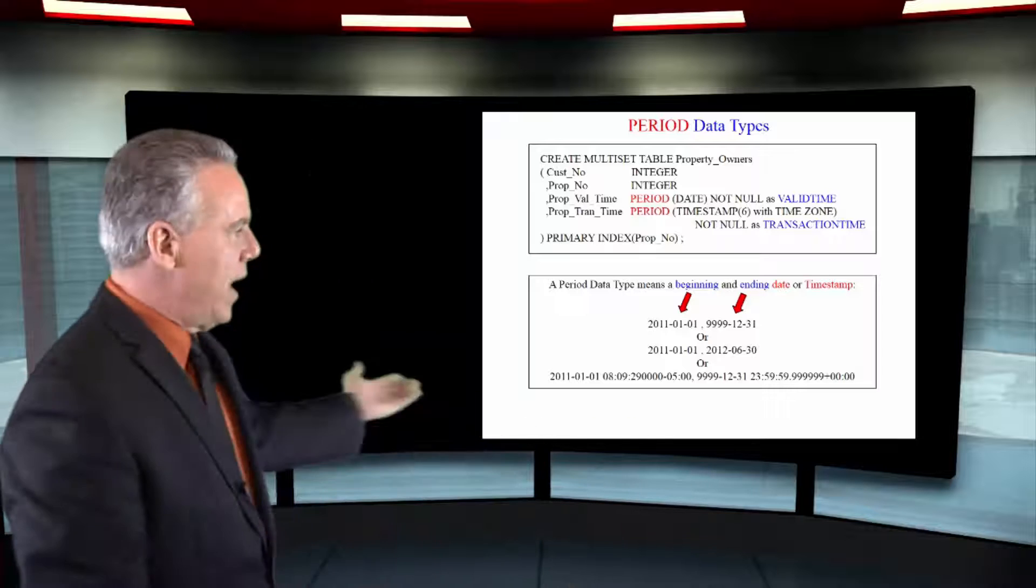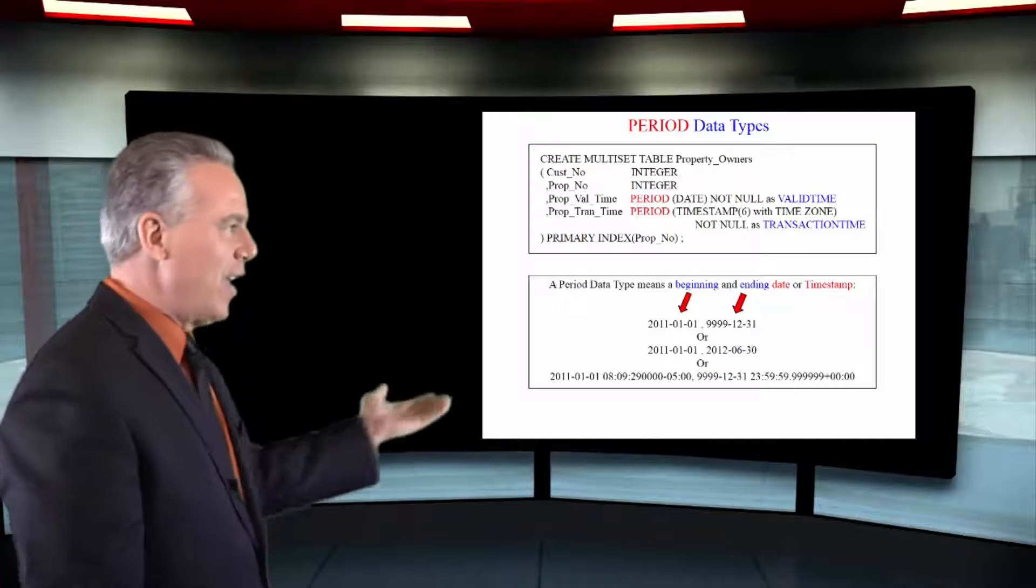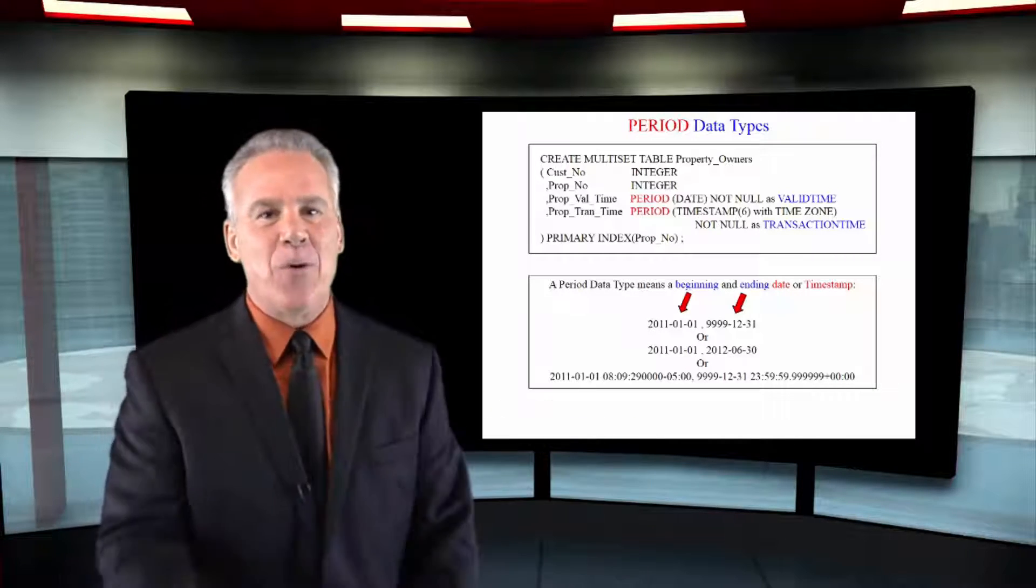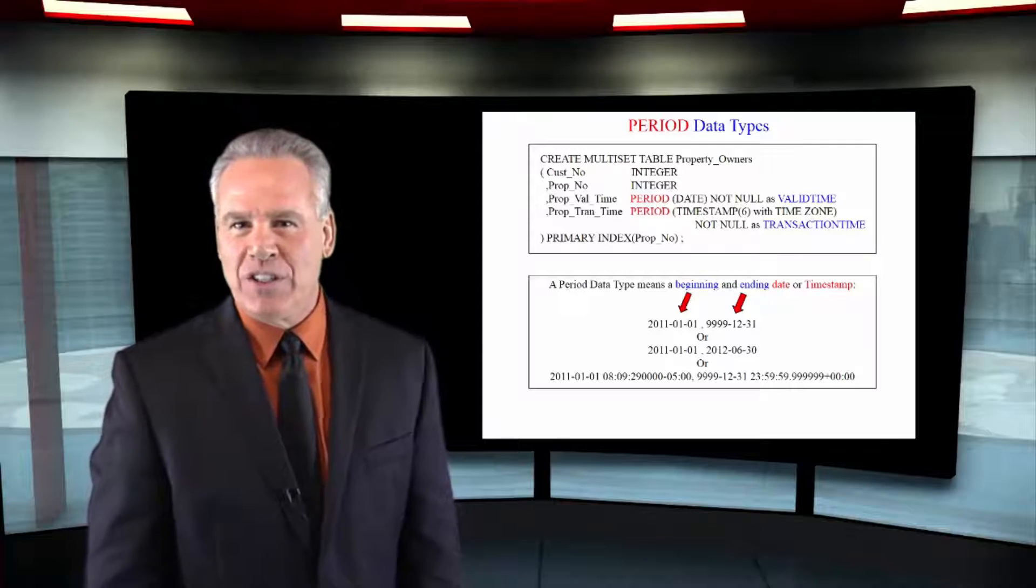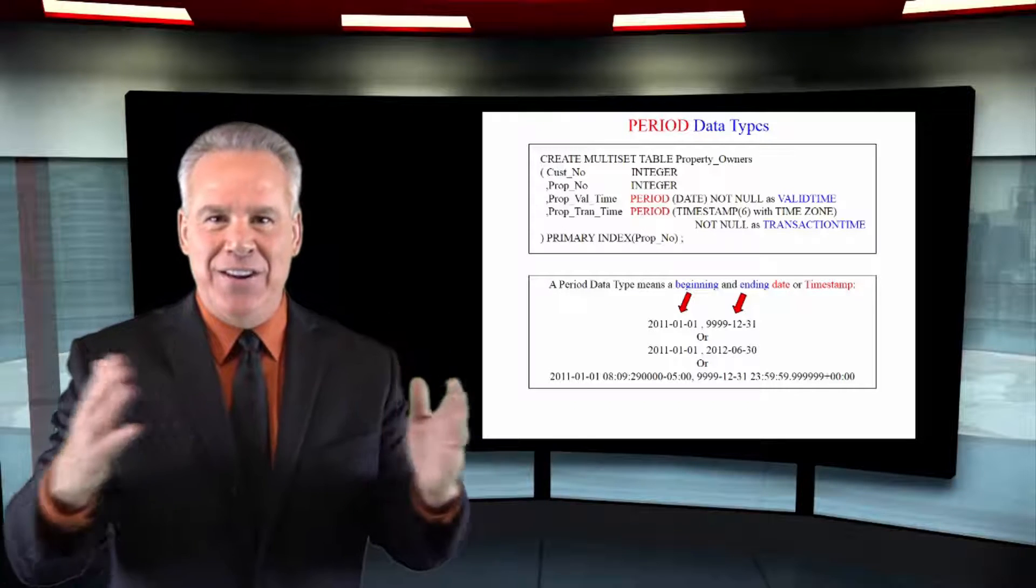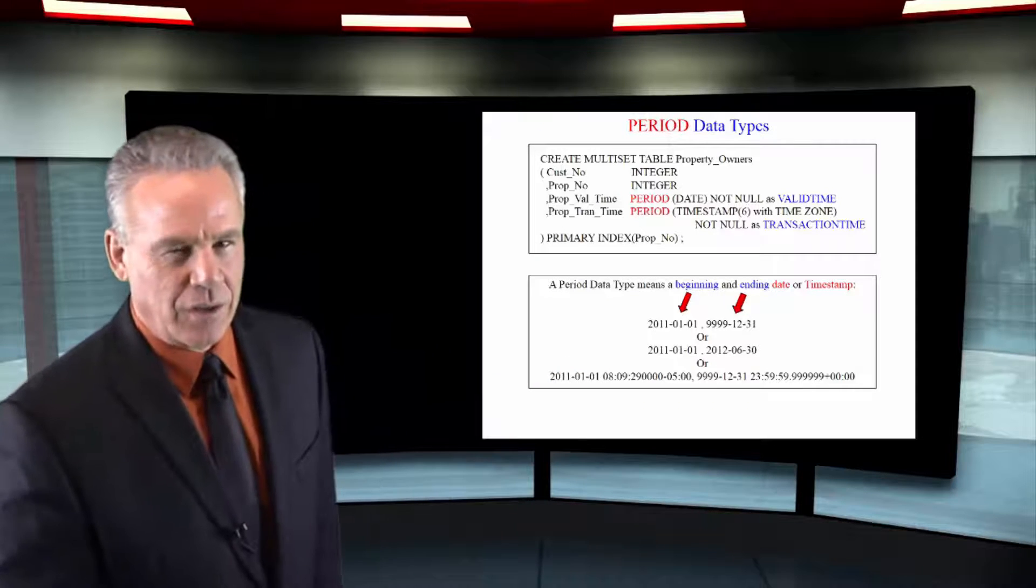And as you can see here, we have a beginning timestamp and then our 9999 stuff. So that row is still open or established as it is open till the end of time or until we close it.